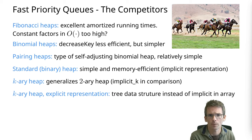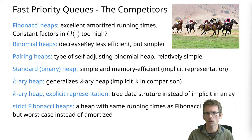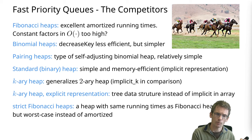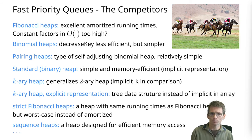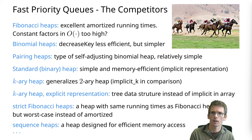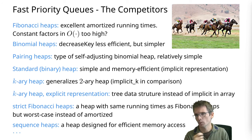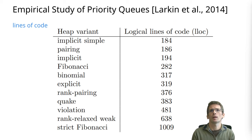Two more data structures: strict Fibonacci heaps, which are a variant of the Fibonacci heap where instead of amortized running times, we get the same guarantees but as worst-case bounds. And sequence heaps, which are designed for external memory or generally efficient memory access, including cache efficiency. We will come to sequence heaps in the comparison at the very end.